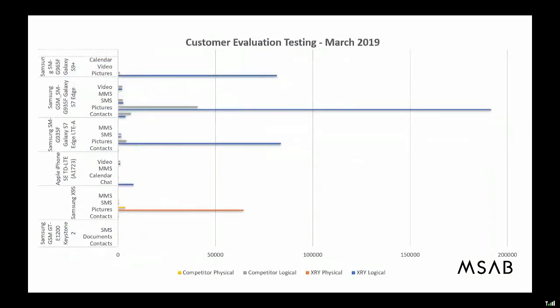It's always better when a real-life customer tells us about performance. This is a screenshot of comparison testing that one of our customers did last year comparing six phones against a leading competitor. You can see we've done a particularly good job in terms of decoding pictures and video. Every phone is different and every tool has its strengths — we're not saying you should only have one tool — but if you did a side-by-side comparison with ten phones, I think you'd find XRY is capable of getting you a lot more data.